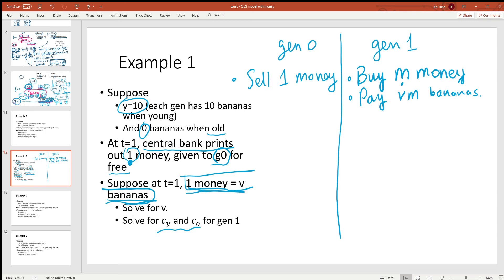To buy m money, generation one cares about their lifetime happiness, which is c_young times c_old. When they are young they have 10 bananas, but they have to pay vm bananas to buy the money, so what they have left to eat is 10 minus vm bananas. When they are old they have no bananas to eat, but they have the money they bought when they were young. They can sell the m money for vm bananas.